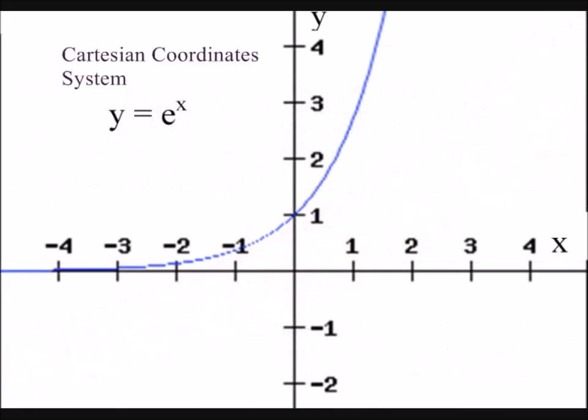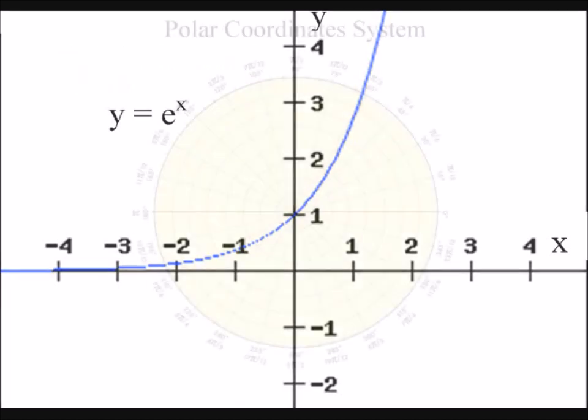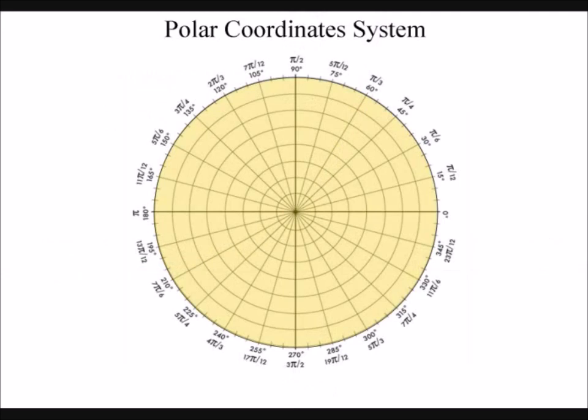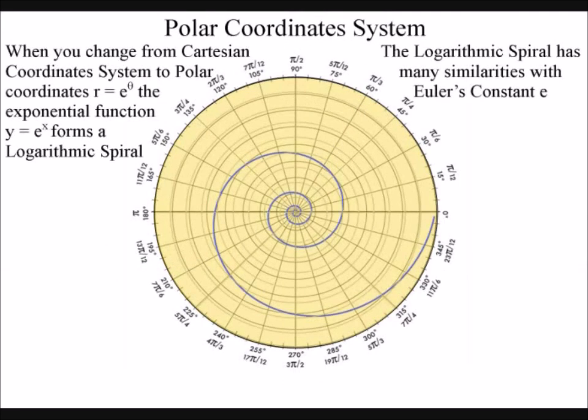A good way to visualize this is to take the exponential function and change the coordinating system from Cartesian coordination to polar coordination. When we do this, the graph turns into a logarithmic spiral that is self-similar, with all the branches having the same shape and rotational angle.